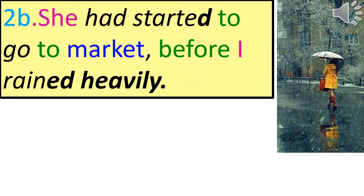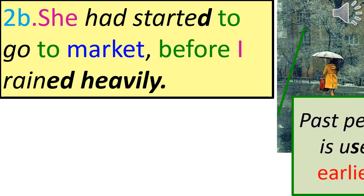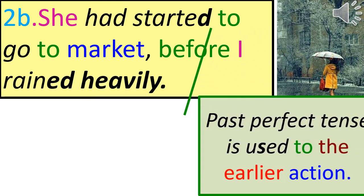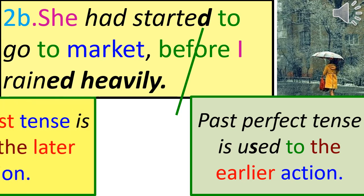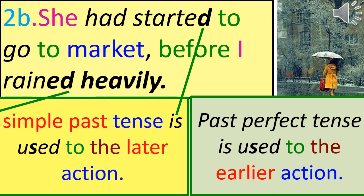Using 'before': 'She had started to the market before it rained heavily.' Past Perfect Tense is used for the earlier action; Simple Past Tense is used for the later action.